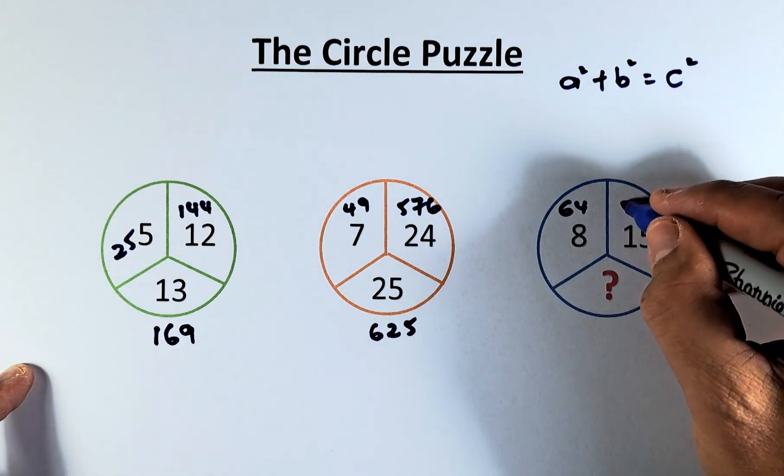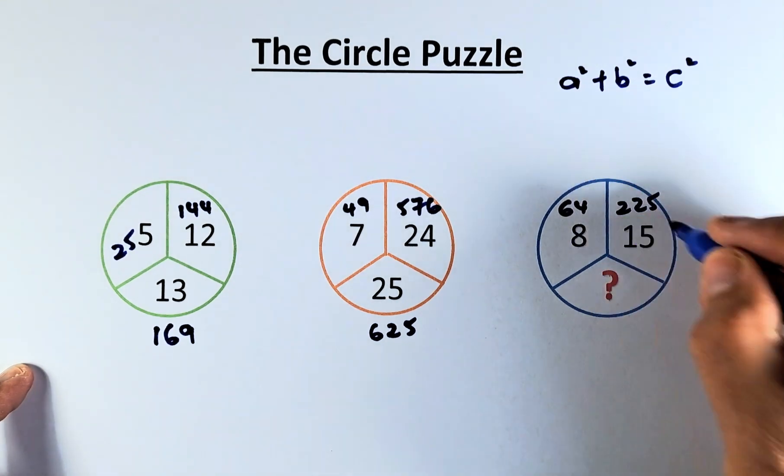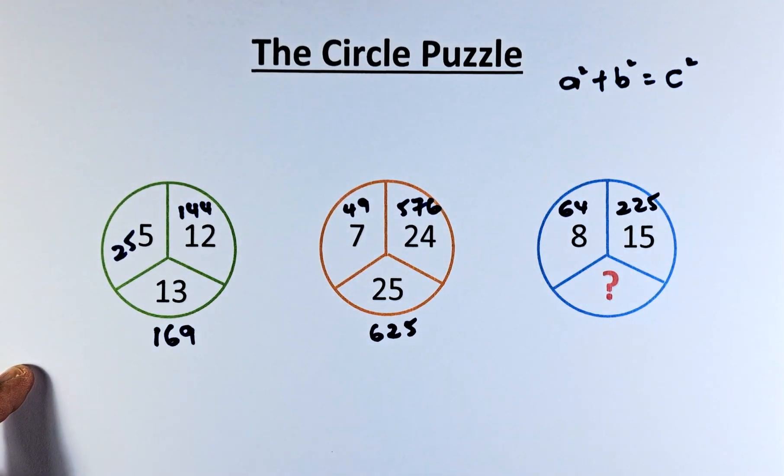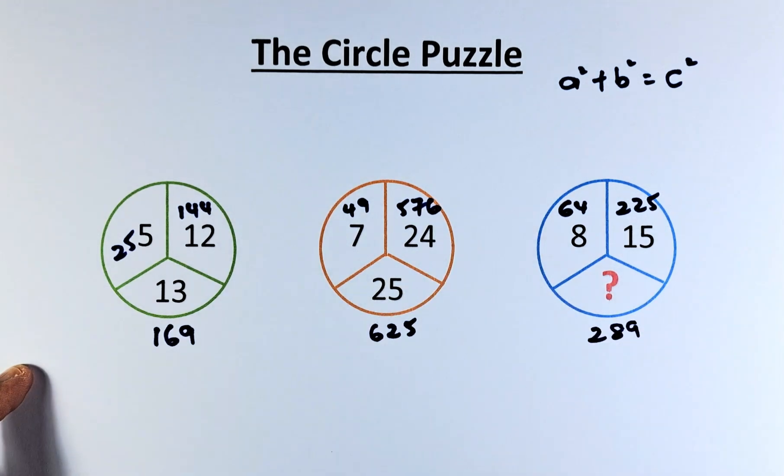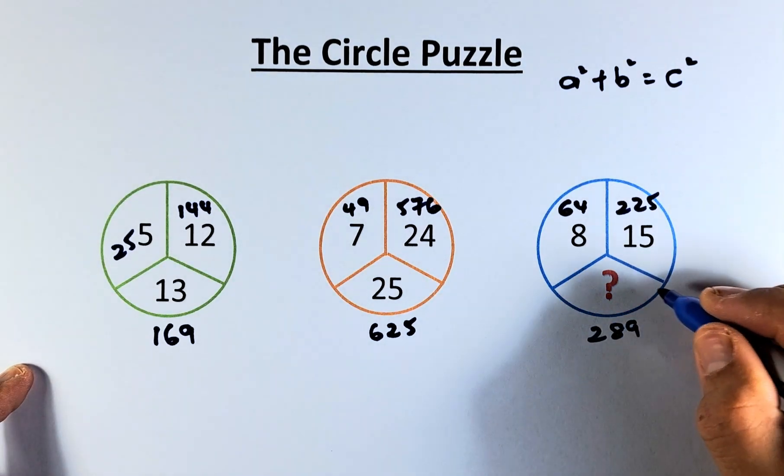15² is 225, and when you add them together, it's 289. To get the question mark, you take the square root of 289, which equals 17.